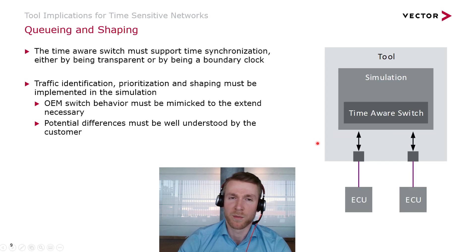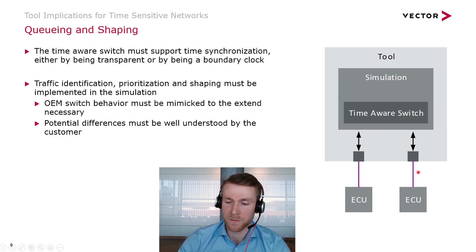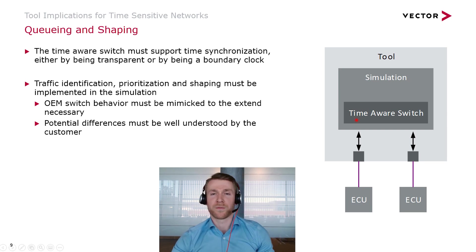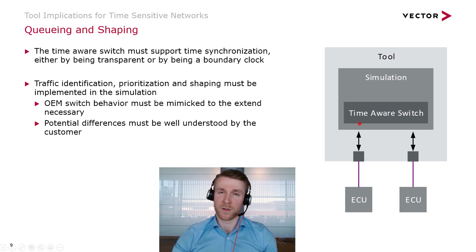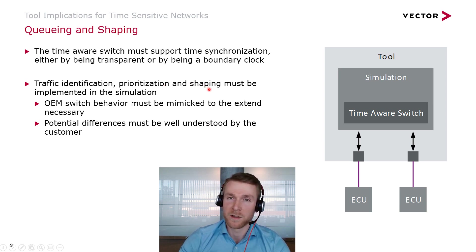Extending this example by inserting a switch into the simulation: the tool now connects to multiple ECUs via the simulated switch, and the simulation shapes traffic on multiple links. The connected ECUs can exchange data over the switch. As we've seen, the switch must implement either a transparent or a boundary clock for time synchronization to continue to function. The switch must also support the customer's use case — basically it must mimic the behavior of an OEM switch to the extent necessary for the simulation. So it must provide traffic identification, prioritization, and shaping. And if the simulated switch differs in some way from the OEM switch, these potential differences must be well understood by the customer so he can account for them in his measurement setup.